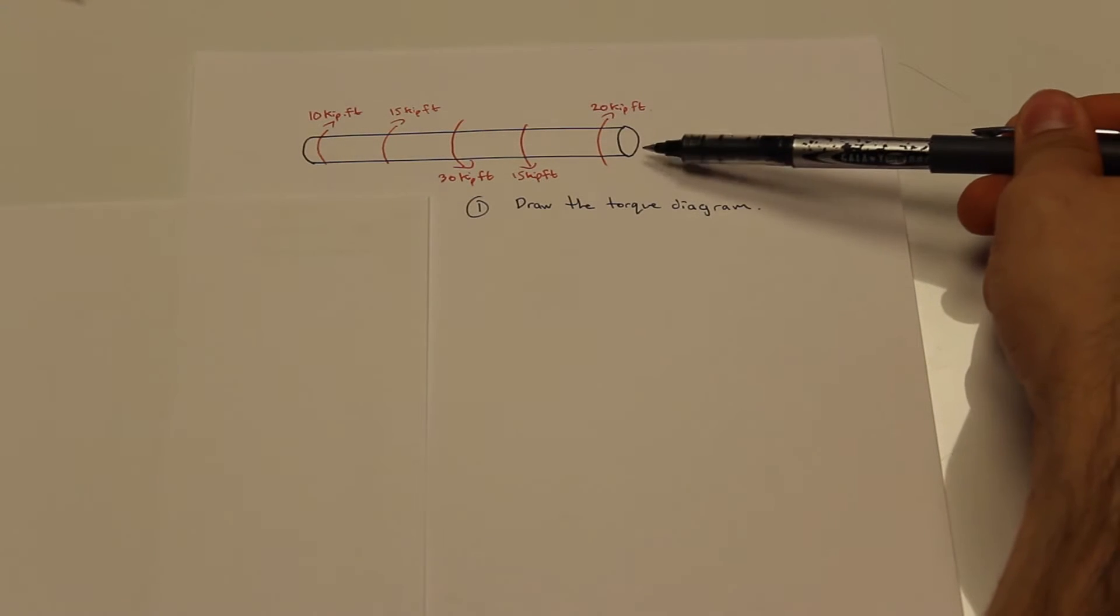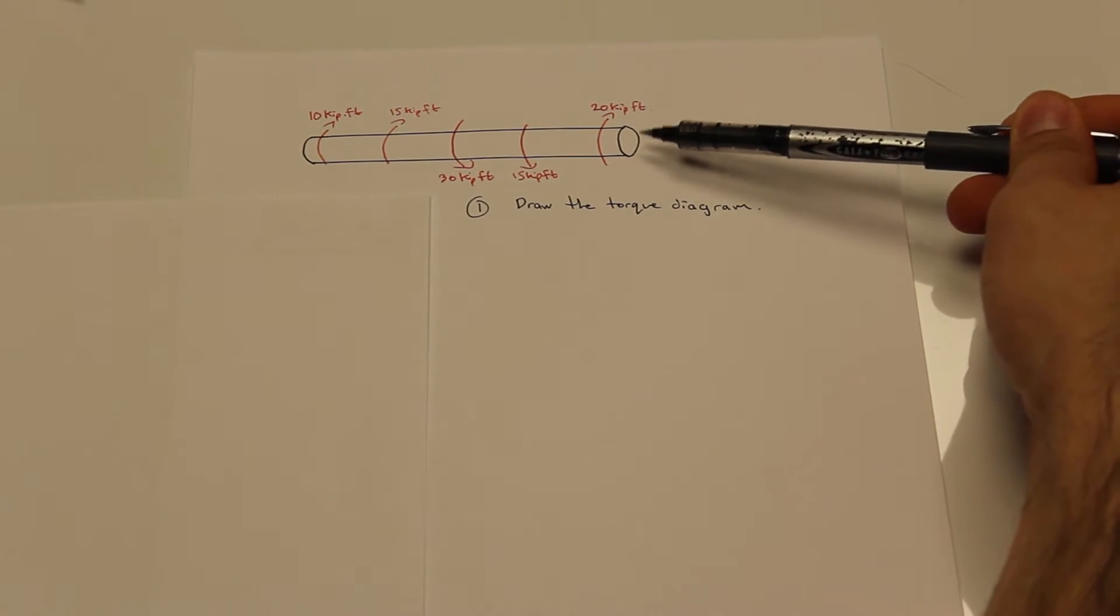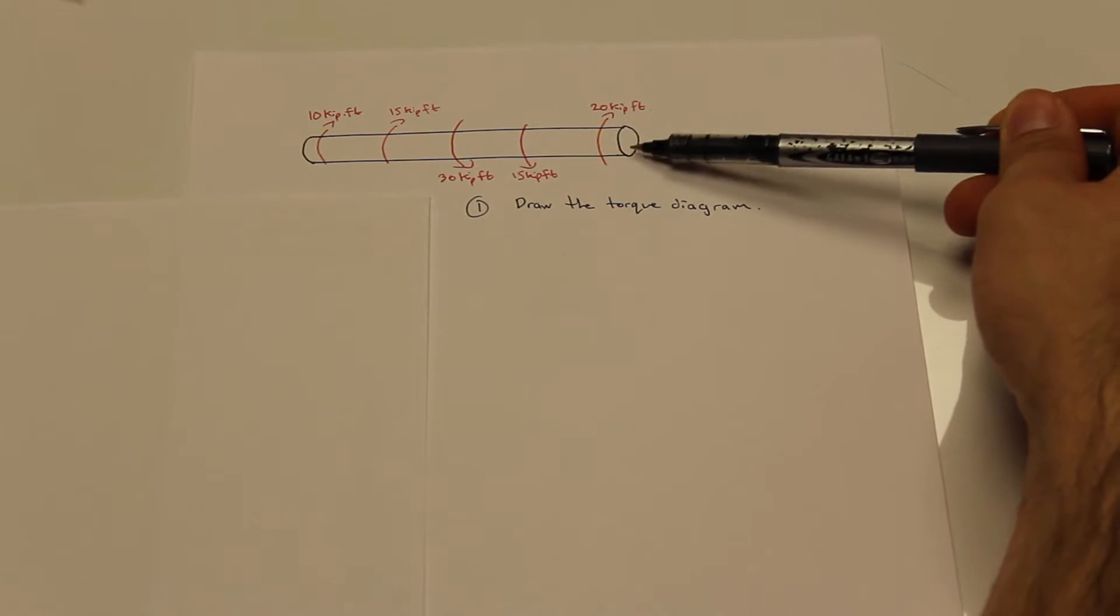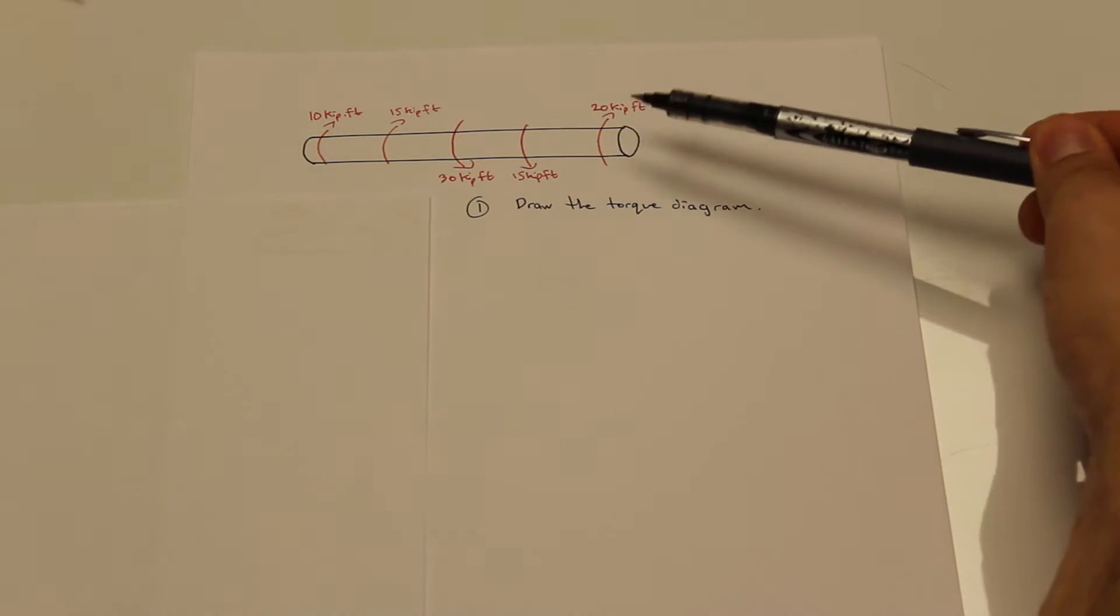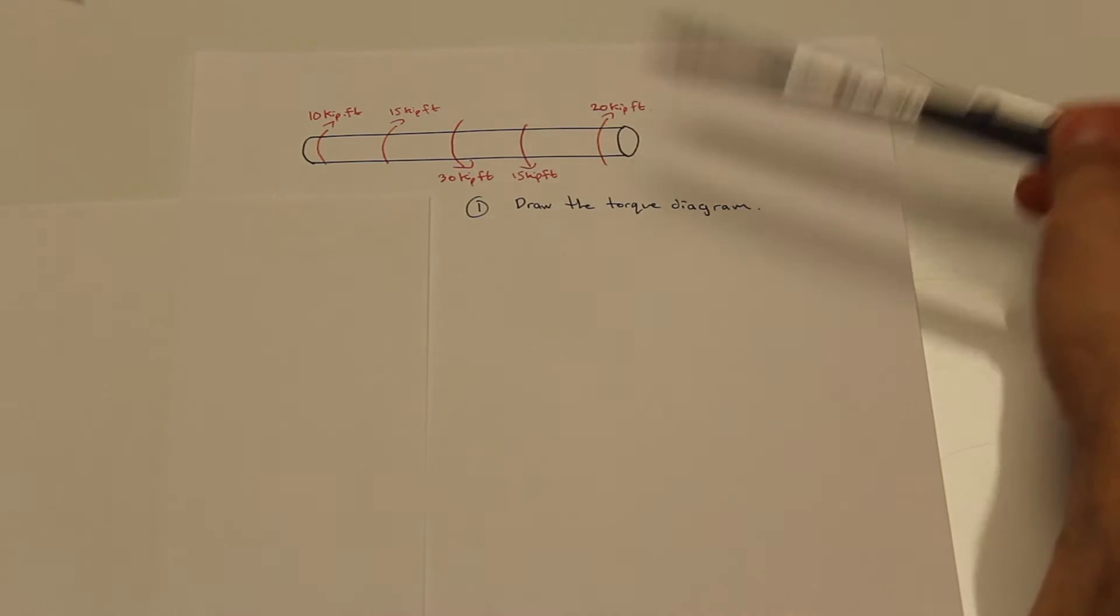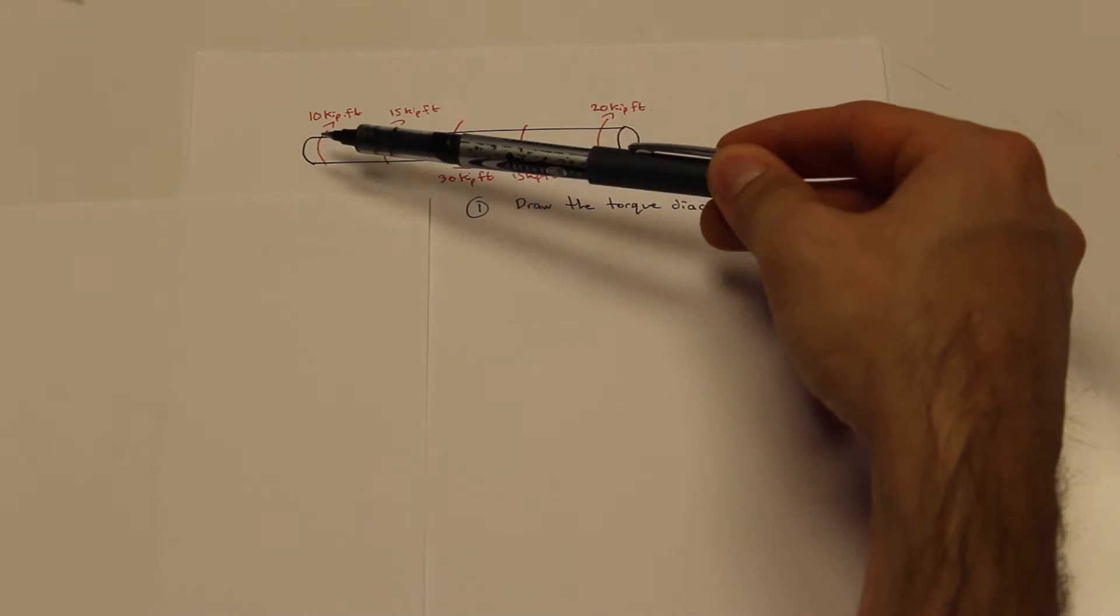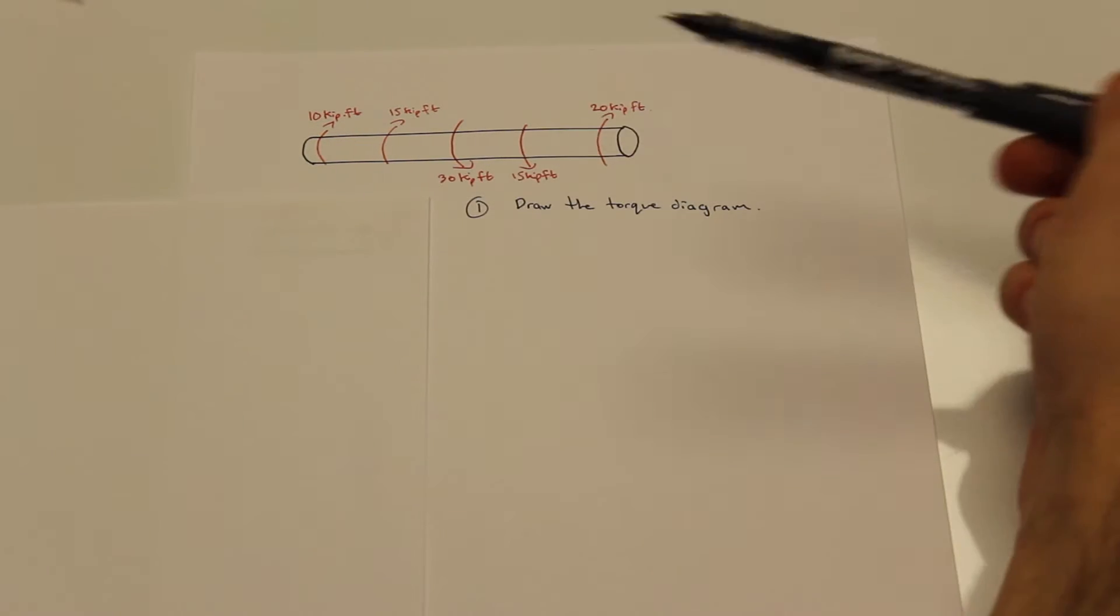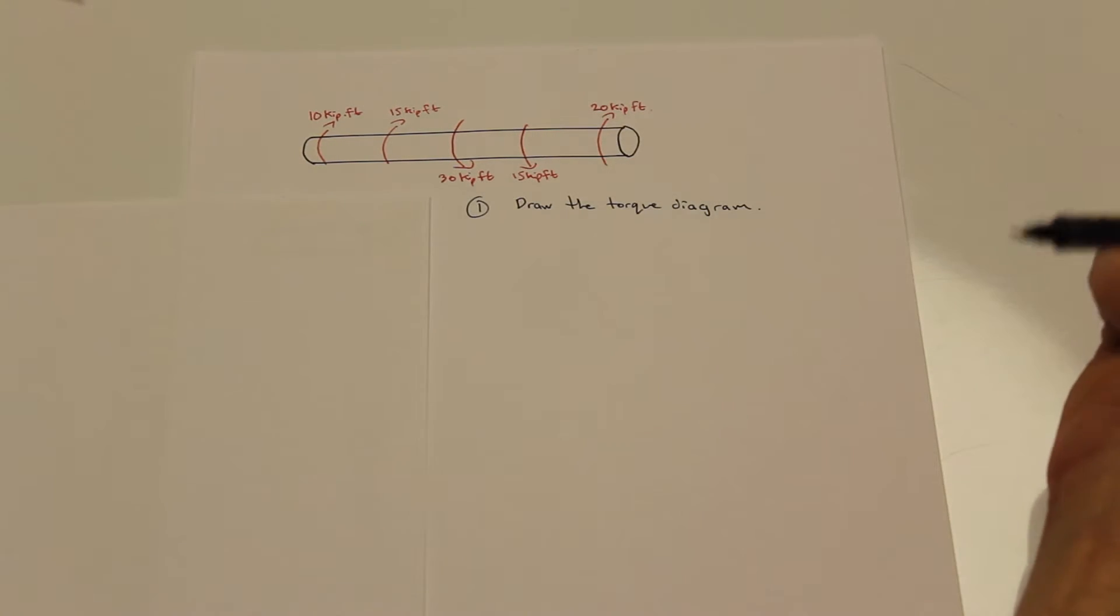Now if you'll take a look at the sketch that I've made up here, we have a circular beam and the circular beam is subject to five external loads or five external torques rather. We have a 10 kip feet torque, 15 kip feet torque, 30 kip feet torque, 15 and 20, and the distances in this case are irrelevant.